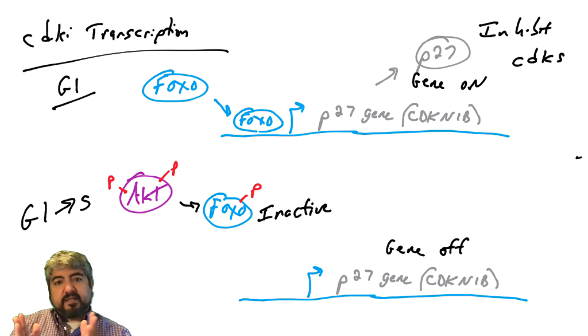So in normal cells, when they want to progress through the cell cycle, they typically activate the AKT kinase, which will then inhibit the FOXO transcription factor, which will then help decrease the levels of P27 at the transcriptional level. And again, in many human cancers, AKT pathway is always active, and that is leading to a decrease in P27 levels.